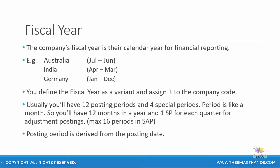The posting period is derived from the posting date. So if you have a fiscal year from January to December and you post an item with date 15th of January 2020, then that is period 1. If your fiscal year is from July to June and you put a posting date of 5th January 2020, then it will not be period 1 — it will be period 7, because period 1 is July, then August, September, October, November, December, and then January comes in as period 7.